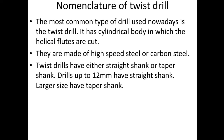The most common type of drill used nowadays is the twist drill. It has a cylindrical body in which the helical flutes are cut. They are made of high speed steel or carbon steel. Twist drills have either a straight shank or taper shank. Drills up to 12 mm have straight shank, and larger sizes have taper shank.